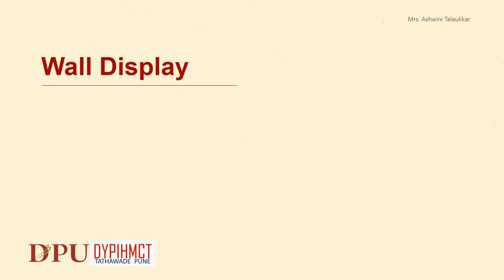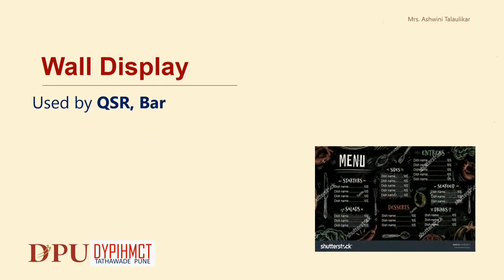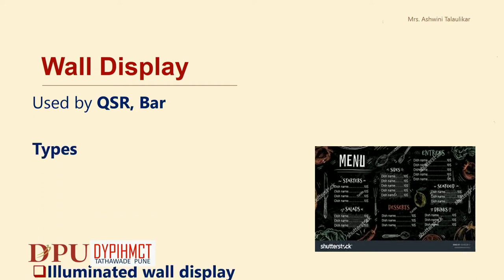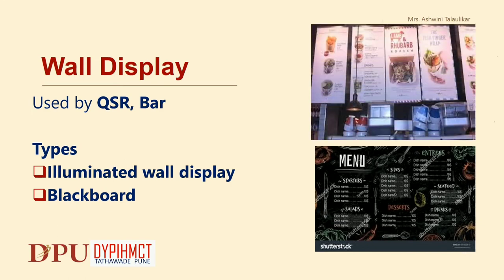The third type of Menu Merchandising Tool is the Wall Display. They are used by Quick Service Restaurants or QSR, and Bars. The types of Wall Displays are Illuminated Wall Display, which we usually see in Fast Food or QSR, or in the form of a Blackboard.